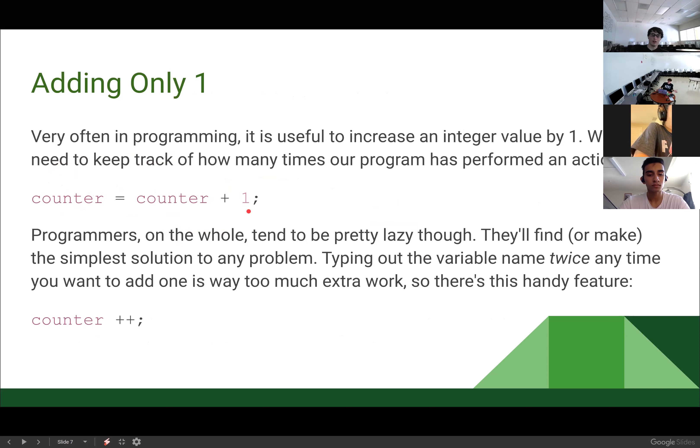Now that's pretty easy, but programmers on the whole tend to be a fairly lazy bunch. They will either find or make a simple solution to a problem. So here I have to type out that variable name two times, which is a lot of work, and is potentially error prone. If I accidentally spell one of them wrong, who knows what error. So in Java, there is a handy feature to increase a variable or an integer variable by one. And it is the plus plus operator. This, when used in conjunction with an integer variable, will increase the value held by that integer variable by one.